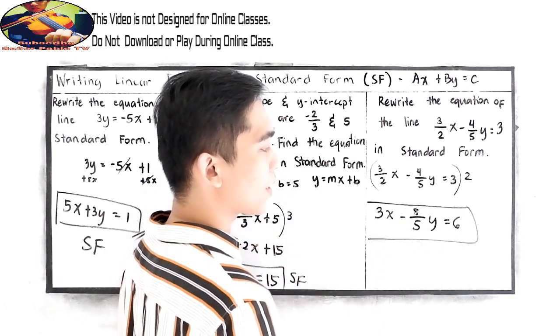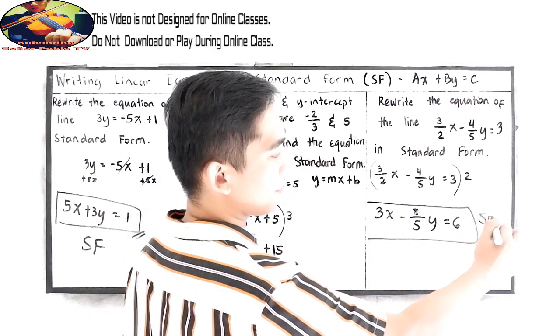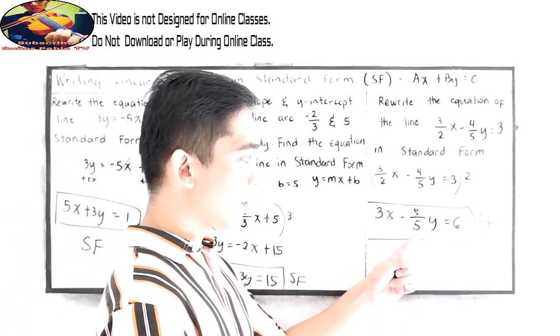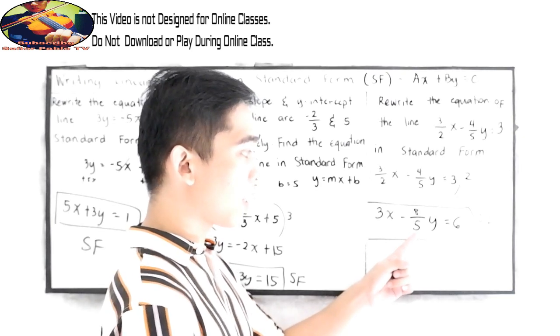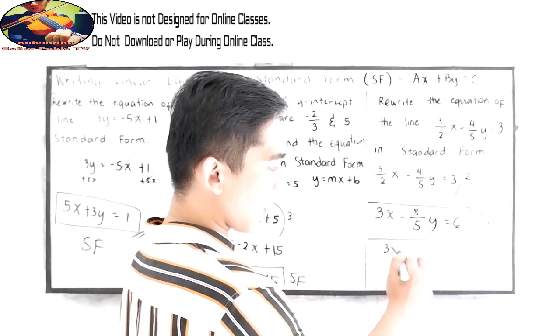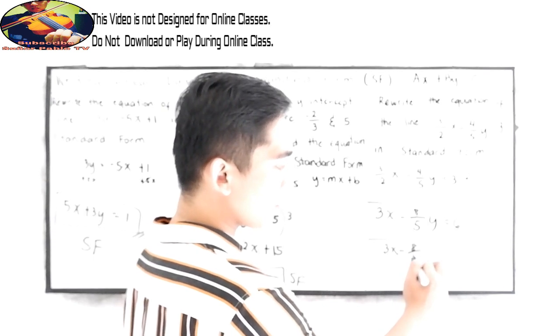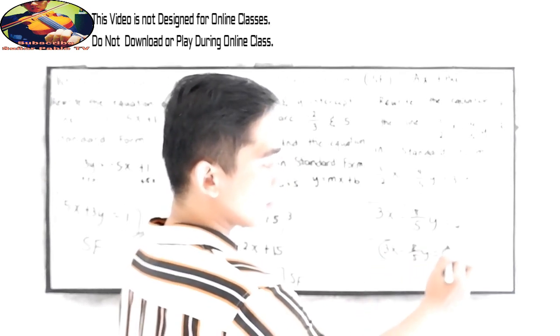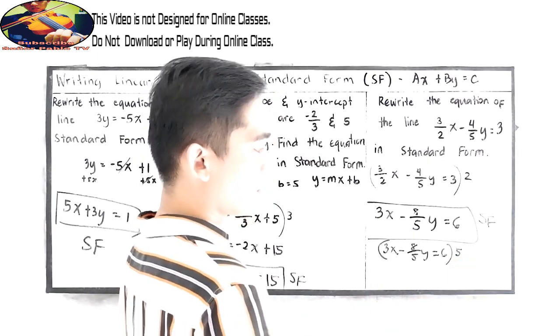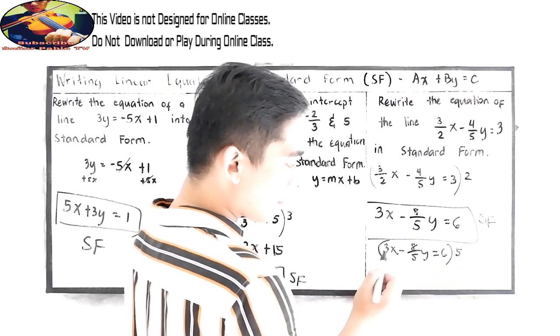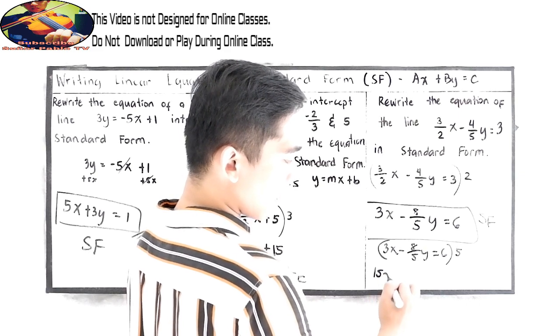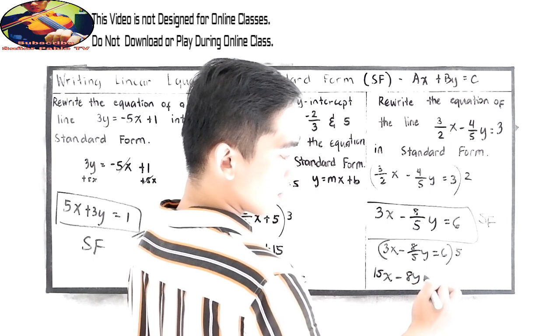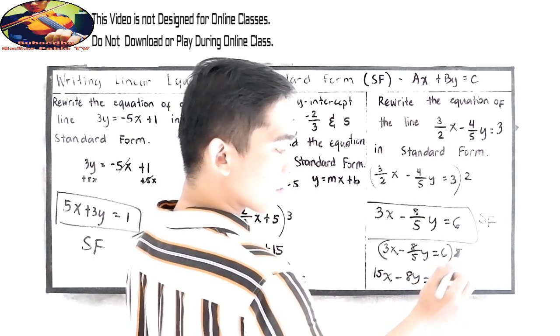If we want to eliminate the remaining denominator, we multiply the equation by 5. So 3x - 8/5 y = 6, multiply by 5: 5 times 3 is 15x, the 5s cancel leaving -8y, equals 6 times 5, which is 30.